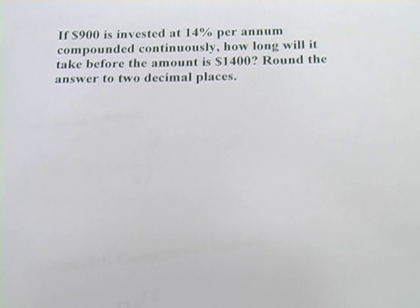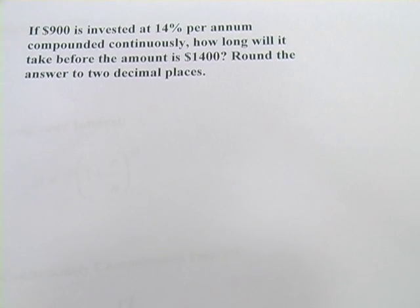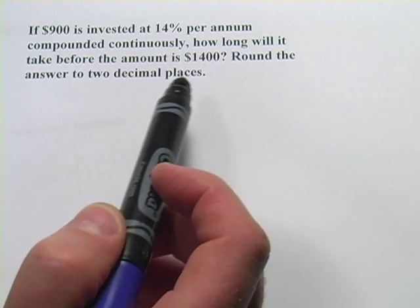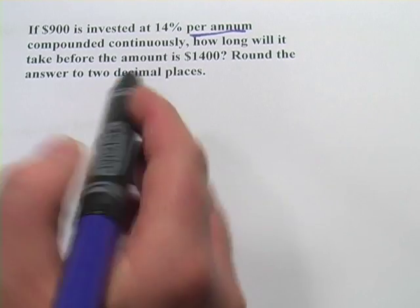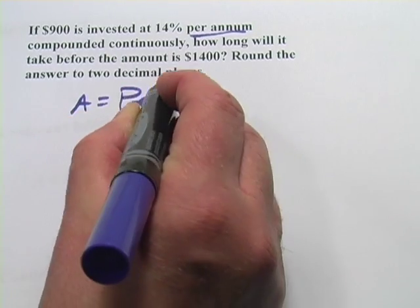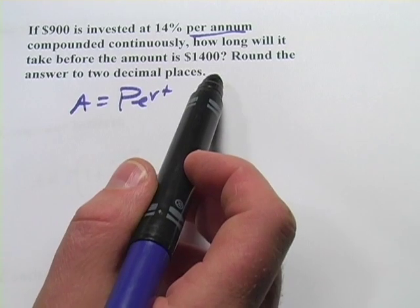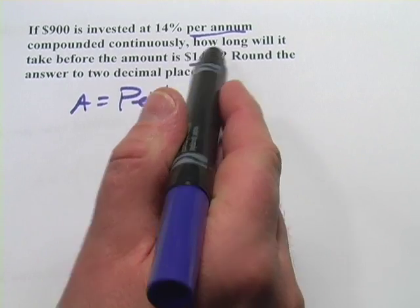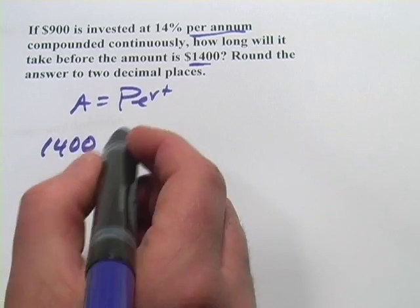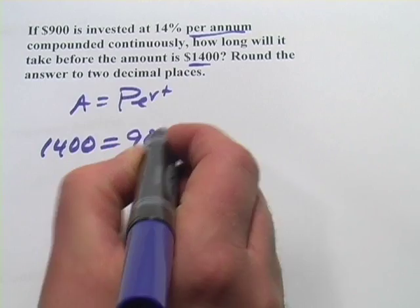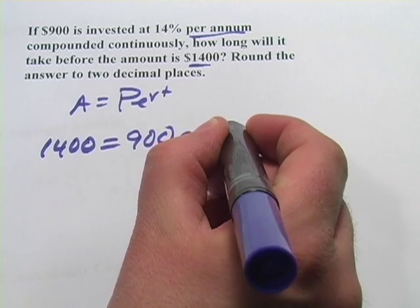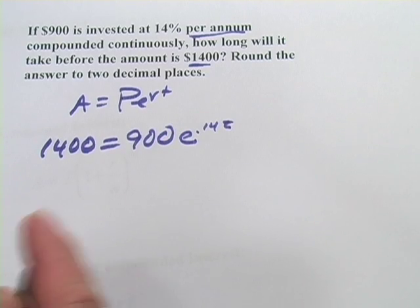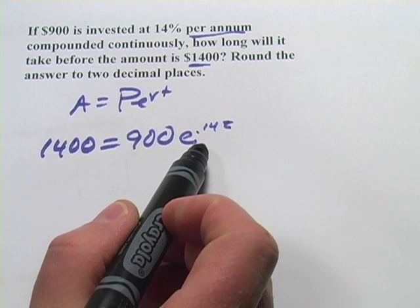Let's look at another one. In this one, it says if $900 is invested at 14% per annum, that's just a fancy way of saying per year, compounded continuously. So this is a PERT formula. How long will it take before the amount is $1,400? So they're giving us the amount here. So $1,400 is in for A. They're giving us the principal, that's 900. Then we have E, and our rate is 14%, so 0.14. What they're not giving us is time. So this one's a little bit different. We're solving for a variable that's up here in the exponent. Although we can do that. It's not too hard.